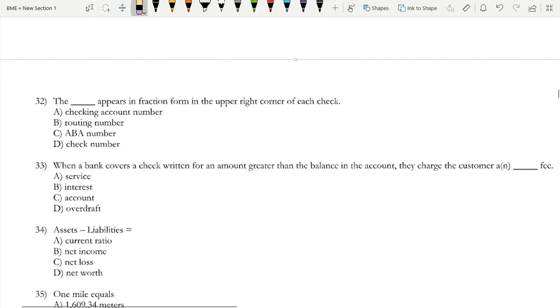What is popping guys, this is part four. We're just going to get right into it. The blank appears in fraction form in the upper right corner of each check. This is the ABA number. This can also appear on the bottom left of the check. The ABA number, in fact, more commonly appears on the bottom left, but none of these other ones are correct.